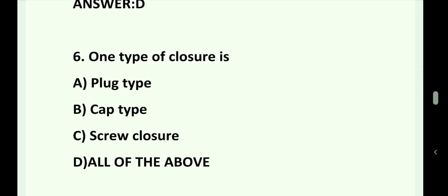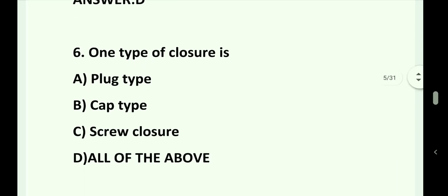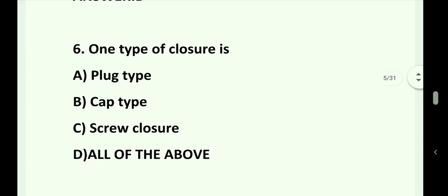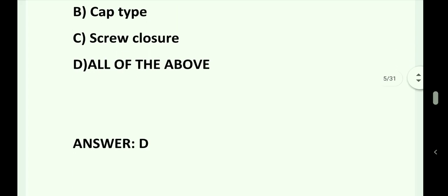Question number 6. One type of closure is: Option A. Plug type. Option B. Cap type. Option C. Screw closure. Option D. All of the above. Answer is Option D. All of the above.